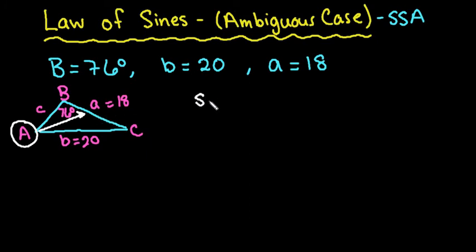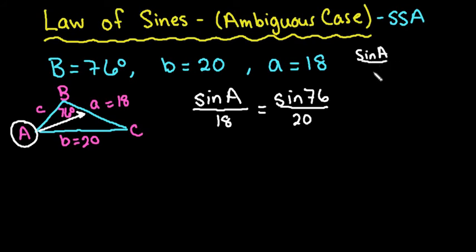So I'm going to say that sine of A over the opposite side, 18, is equal to sine of B, which is 76 degrees, over the opposite side, which is 20. So if you recall, law of sine says that sine A over A is equal to sine B over little b, which is equal to sine of angle C over little c.